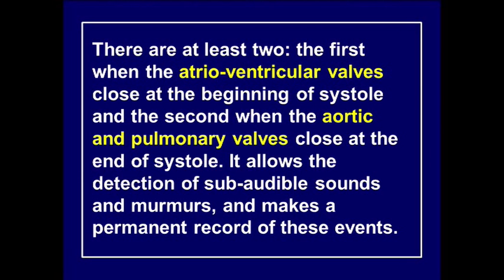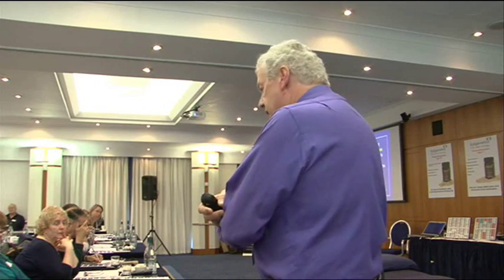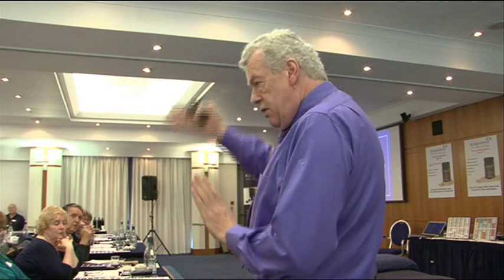Systole is when the heart muscle contracts and sends that pulse out, which is what we read on the blood pressure and feel on the wrist. The second sound is when the aortic and pulmonary valves close, stopping blood from flowing back into the ventricles. The digital stethoscope allows detection of sub-audible sounds and murmurs and makes a permanent record of these events, including digital tracings on a computer.